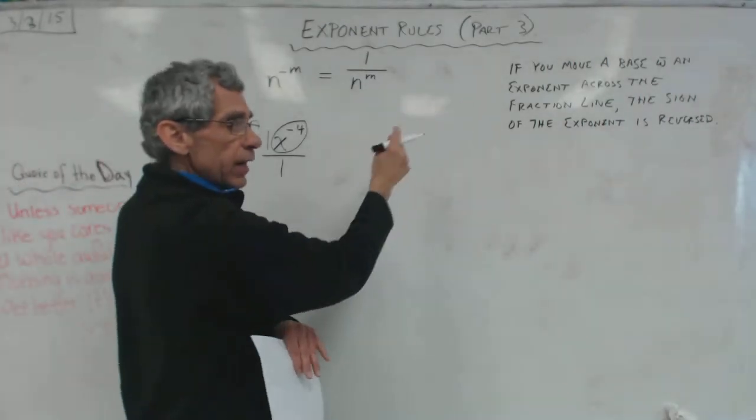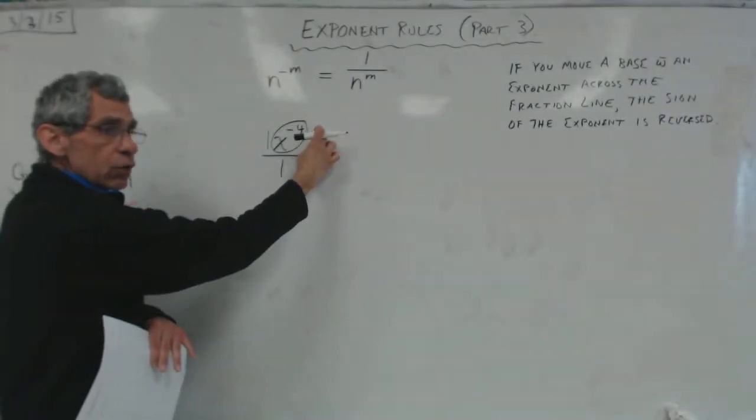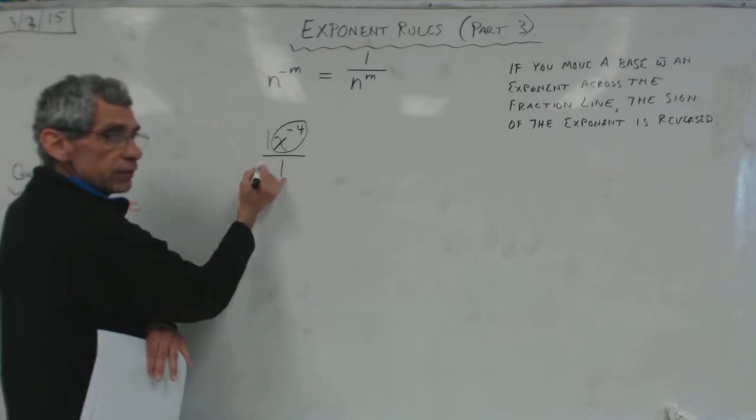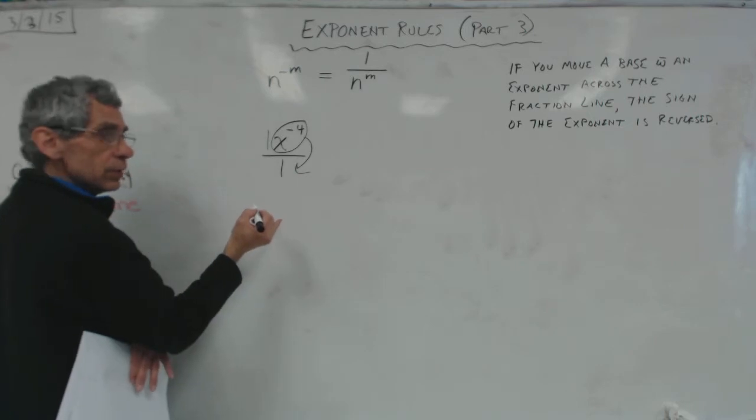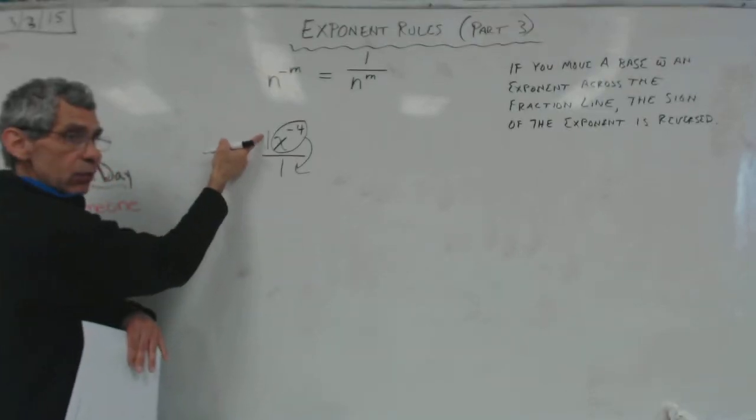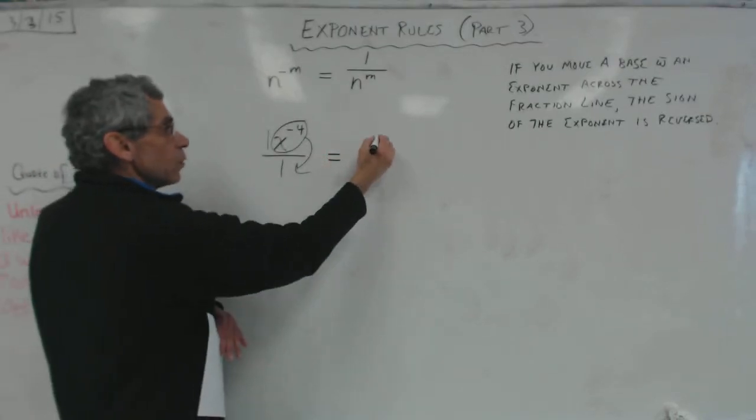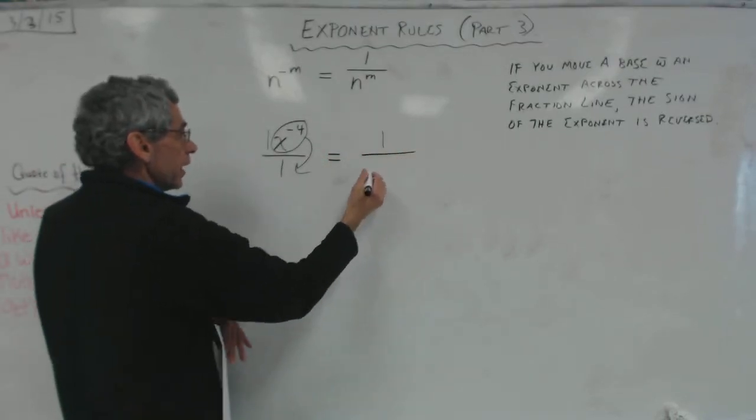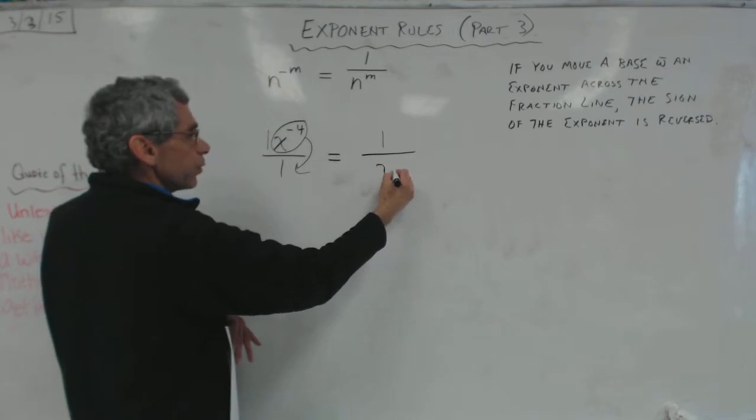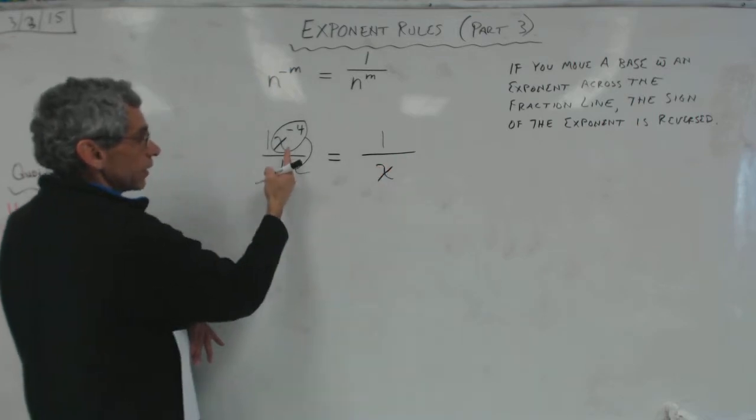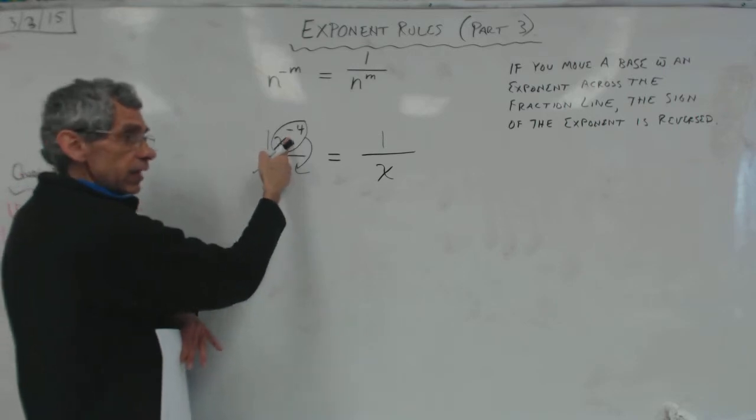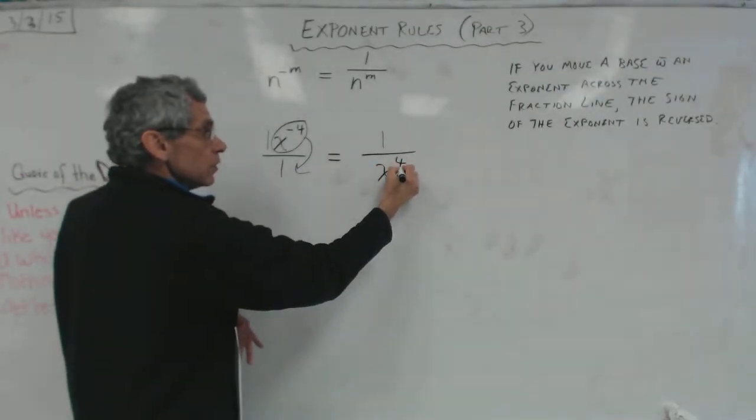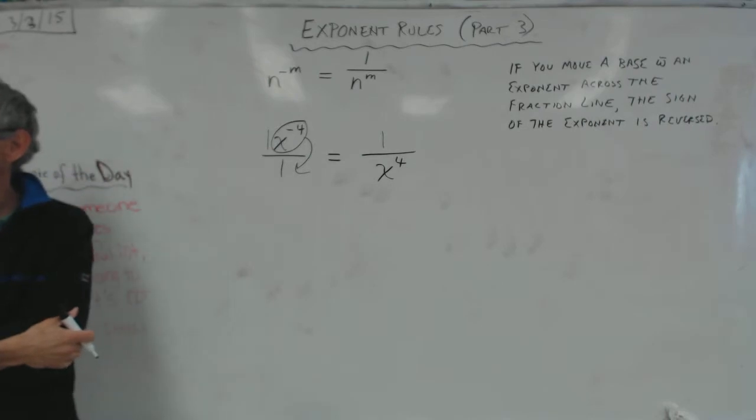So look, this says if I bring this thing across the fraction line, this is the fraction line, right? This thing right here. If I bring this downstairs, I can't, I'm going to leave that 1 there. That's not being affected. So suddenly I've got a 1 upstairs and now I'm bringing this downstairs. But just by bringing it across that fraction line, that exponent changes its sign. It's instead of negative, it becomes positive.